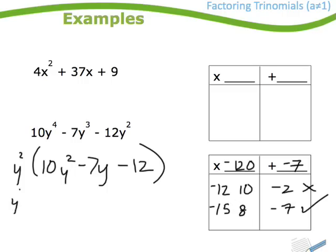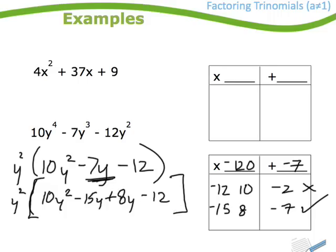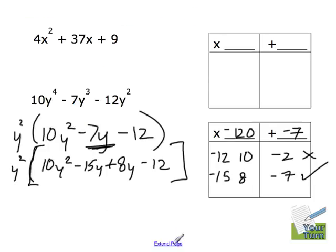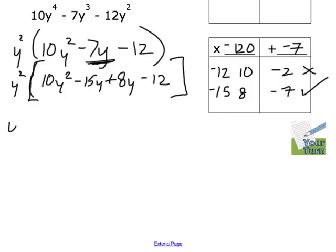So I leave my y squared out front. And then in here, maybe I'll put a square bracket there. I have 10y squared and I replace the middle term with whatever I got here. Minus 15y plus 8y minus 12. We'll keep going here. So y squared. Now I'd group factor.